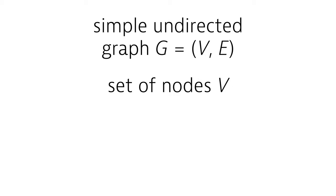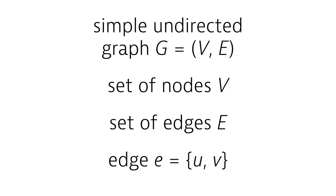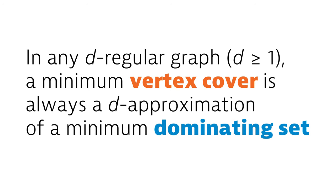There is a finite, non-empty set of nodes, and a set of edges, and each edge is a set of two nodes. To illustrate some key ideas, I will prove the following theorem: in any d-regular graph where d is at least 1, a minimum vertex cover is always a d-approximation of a minimum dominating set.